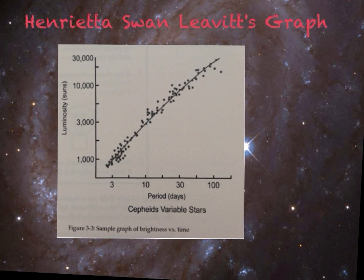This is an image of Henrietta Swan-Levitt's graph, and like we said in the graph before that the period was three days, we figured out that from three days our luminosity must be a thousand.